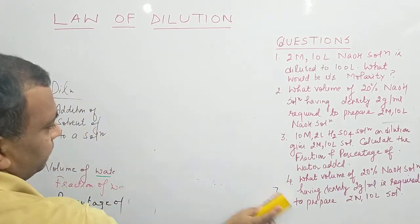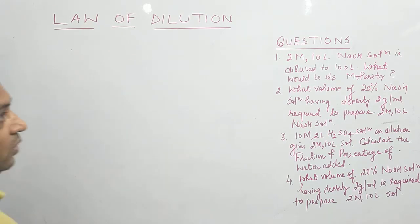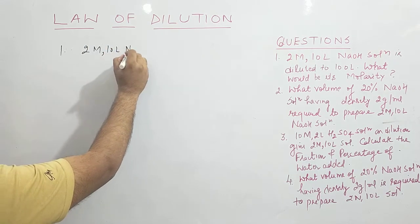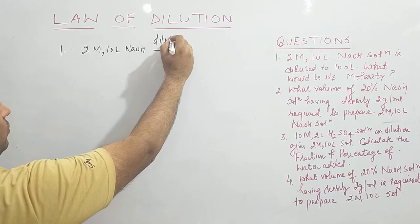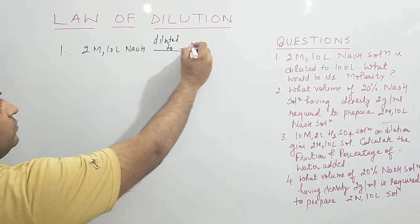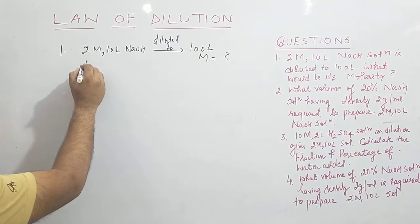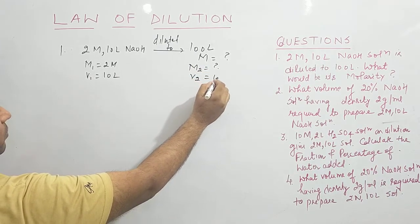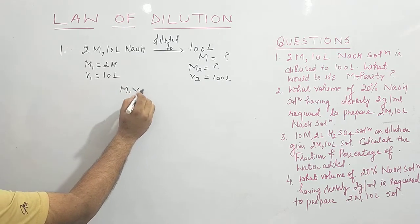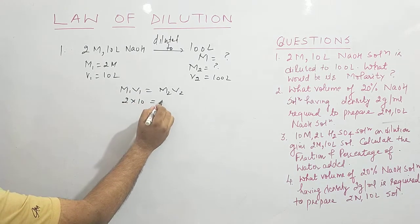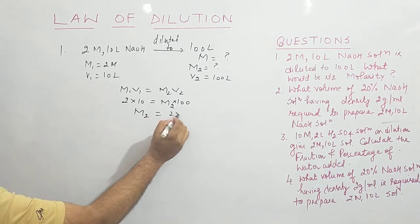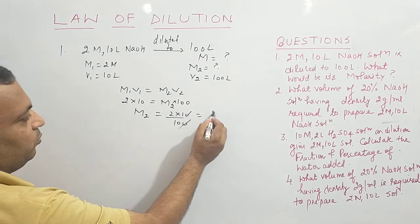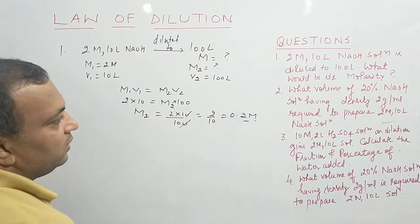Question 1: A 2 molar, 10 liter NaOH solution is diluted to 100 liters. Find its molarity. Here M1 = 2 molar, V1 = 10 L, V2 = 100 L, and M2 is unknown. Applying M1V1 = M2V2: 2 × 10 = M2 × 100, so M2 = 20/100 = 0.2 molar.